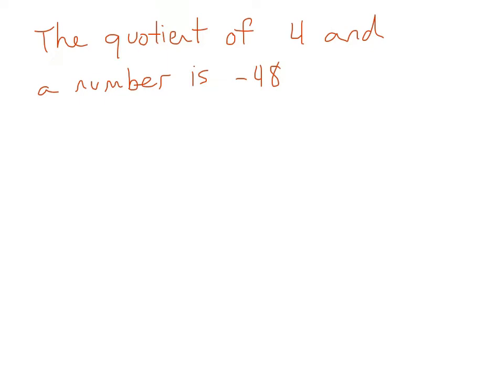Alright, the quotient of 4 and a number is negative 48. So what do we start with? Well, the quotient of, so we're talking about division, and we'll use a fraction bar, or a division bar, either way. The quotient of 4 and a number. So what comes first? Well, the 4 comes first, so it's going to go on top. And a number. Well, what number? We don't know, so again we use a variable. Is means equal, and what is it? It's negative 48. So there you go. The quotient of 4 and a number is negative 48.